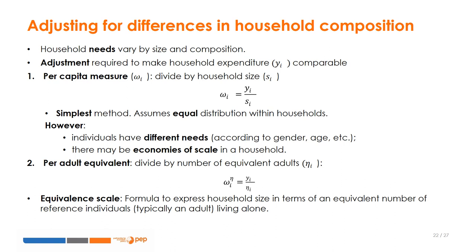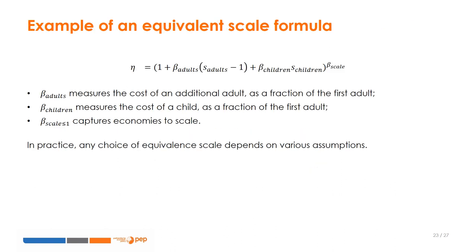In such a case, individual welfare omega is obtained by dividing the constant price household welfare measure by the total equivalent adults in the household. Total equivalent adults are calculated by adopting an equivalent scale — a formula used to express household size in terms of an equivalent number of reference individuals, typically an adult living alone. Here we provide an example of a formula for estimating an equivalent scale. The equivalent scale ETA is simply the sum of 1 plus the cost of additional adults and children — both expressed as fractions beta of the cost of the reference adult — all to the power beta scale, which captures the effect of economies of scale.